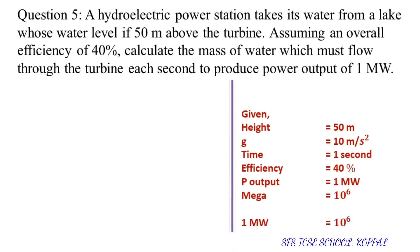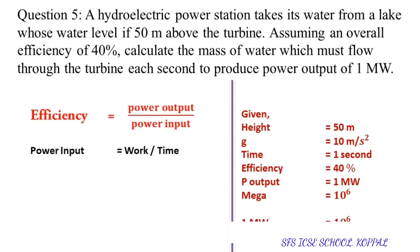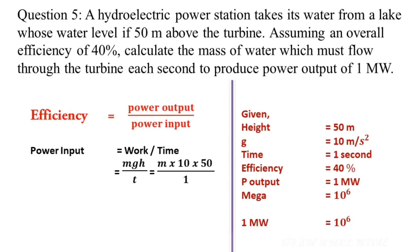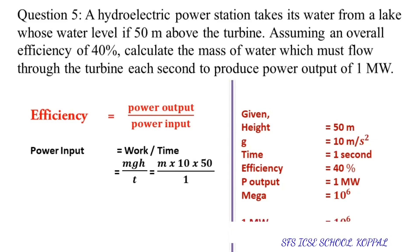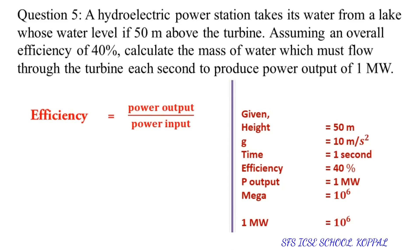We know efficiency is equal to power output divided by power input. Let us find the value for power input. Power is equal to work divided by time, which equals mgh divided by time. Substituting the values: m multiplied by 10 into 50, divided by 1, that is equal to 500m.